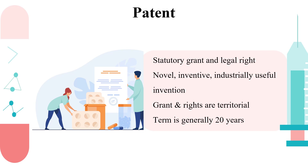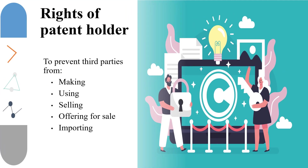The grant of a patent and the rights so extended are territorial in nature, which means that an Indian patent is valid only in India. The term of a patent is usually 20 years, after which a patent expires, and after expiry anyone can use such an expired patent without requiring permission of the patent holder. The patent holder has the right to prevent third parties from making, using, selling, offering for sale, or importing the patented invention in the country where he has patent protection.